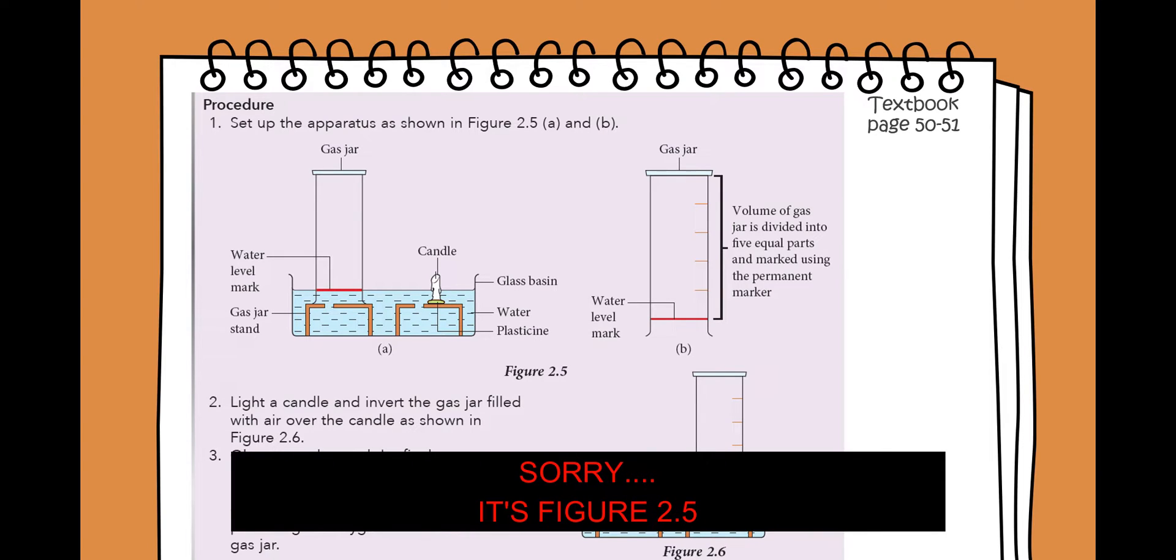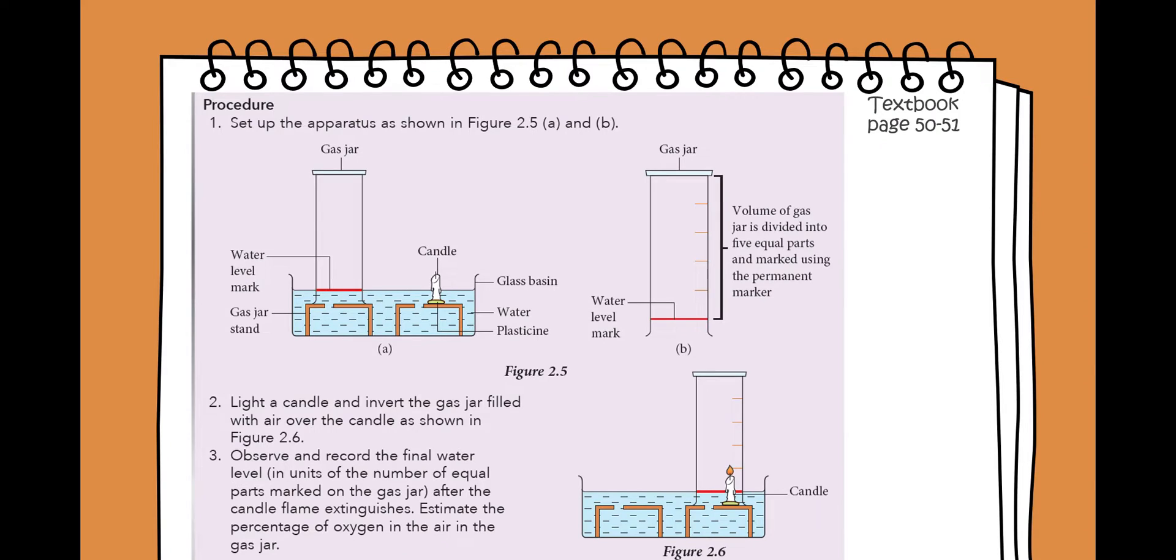First of all, you need to set up the apparatus as shown in Figure 2.1. If you look at diagram B, the jar is divided into five equal parts and marked using the permanent marker, but what I did was I divided the jar into 10 equal parts with rubber bands.